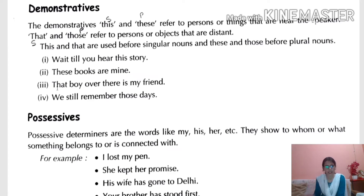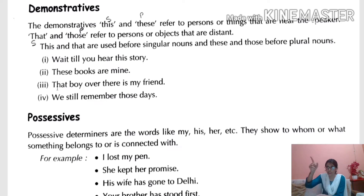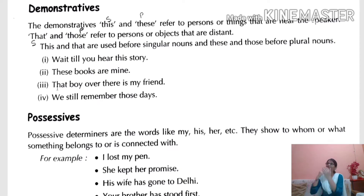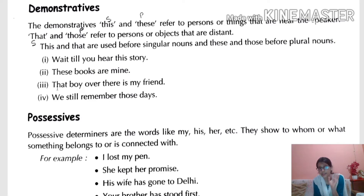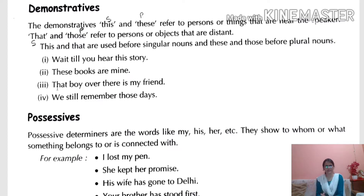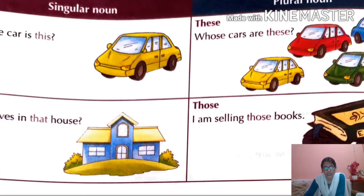'That book' — singular, the boy is standing at a distance. 'That boy over there is my friend' — 'that' is singular and refers to someone at a distance. 'We still remember those days' — 'those' refers to past, distant things in plural. We are talking about many days, not just one.